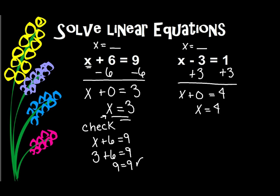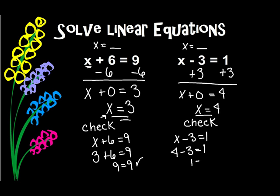Remember, it's a good idea to check your answers to make sure that they're correct. So my original equation is x minus 3 equals 1. Well, we decided that x equals 4. So let's put 4 in for x: 4 minus 3 equals 1. 4 minus 3 is 1, so 1 equals 1, and I know that I did those correct.